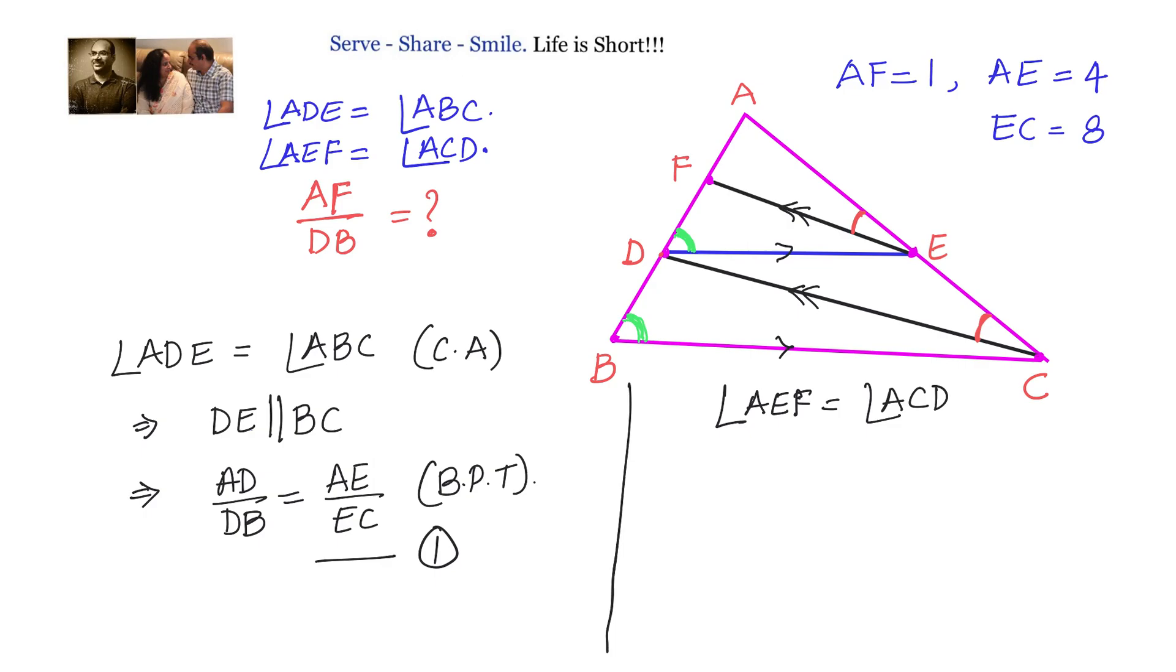So we can write down that means EF is parallel to CD, or we can write AE by EC equals AF by FD. We have been given that AE equals 4, EC is 8. That means AE by EC is 1 by 2. So this equals 1 by 2.